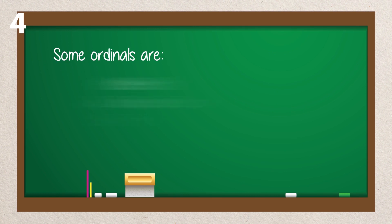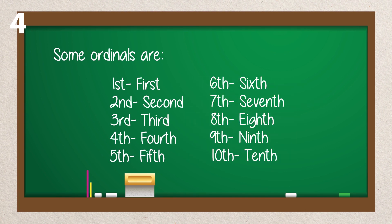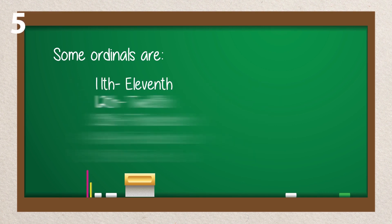Some ordinals are: the ordinal number of 1 is 1st, the ordinal number of 2 is 2nd, the ordinal number of 3 is 3rd, the ordinal number of 4 is 4th, the ordinal number of 5 is 5th, the ordinal number of 6 is 6th, the ordinal number of 7 is 7th, the ordinal number of 8 is 8th, the ordinal number of 9 is 9th, the ordinal number of 10 is 10th.